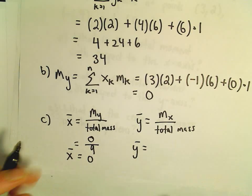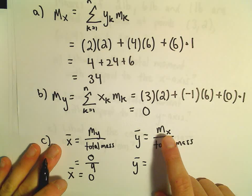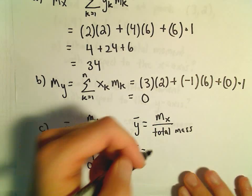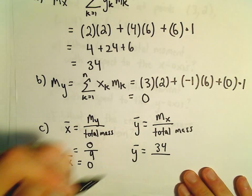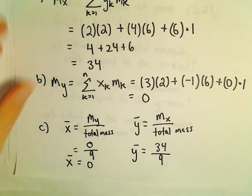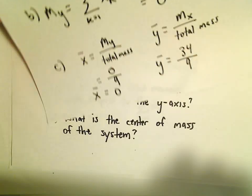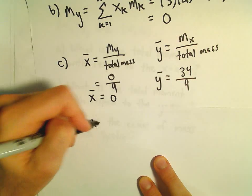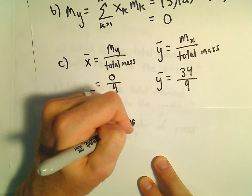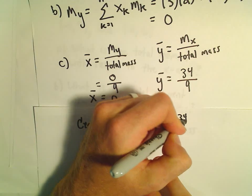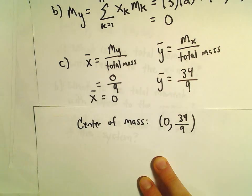Our y-bar, which is the moment about the x-axis, we had that to be a value of 34. And we'll divide that by the total mass, which is 9. So we can simply say the center of mass would be at the point (0, 34/9).